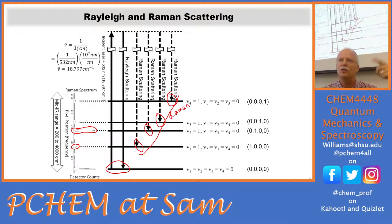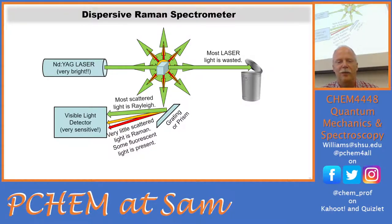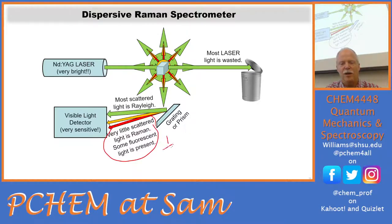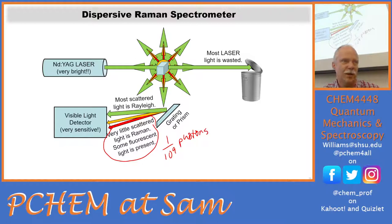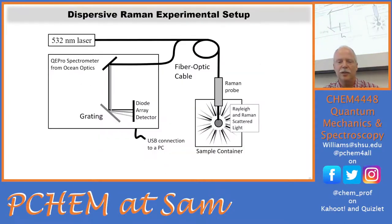We detect red-shifted Raman photons at particular frequencies corresponding to the fundamentals, and those spectra line up with infrared. Most laser light is Rayleigh scattered or passes through — we have to throw that away and look at the Raman-scattered light, which is only about one in a billion photons. Without a laser this wouldn't be a practical technique — lasers provide so much light in a particular direction.